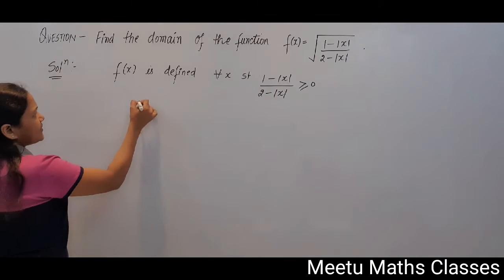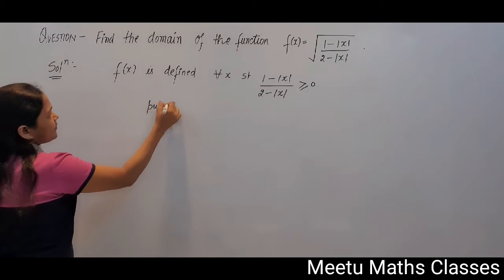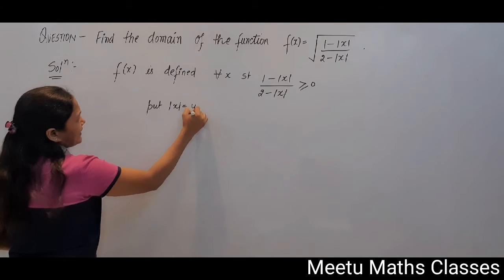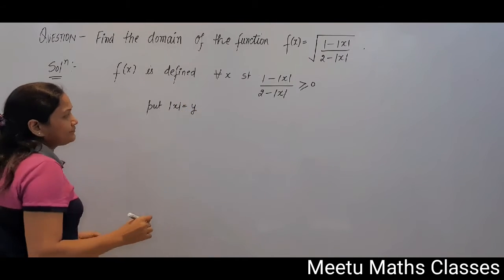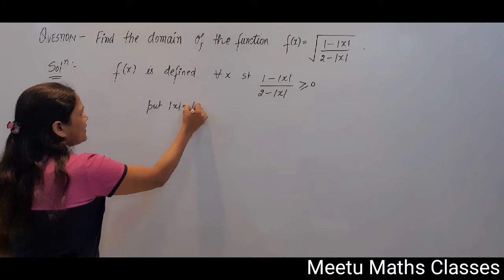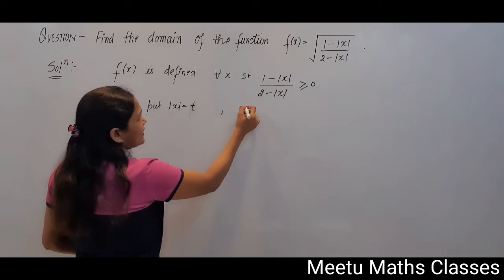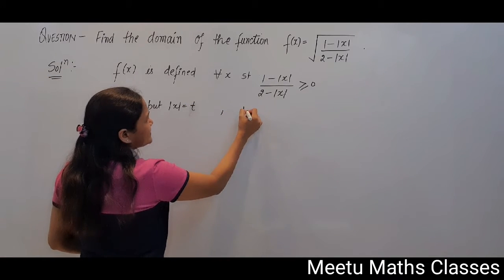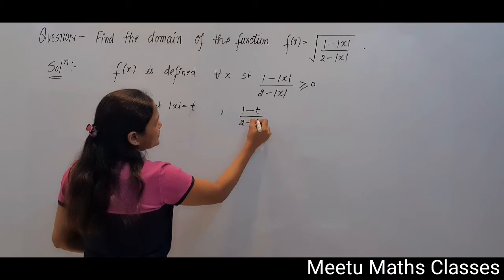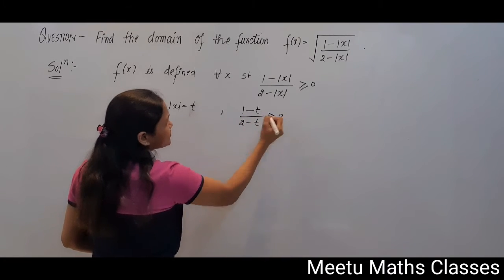Now we can substitute |x| = t. So our purpose is to find the values of t for which (1 - t) / (2 - t) should be greater than or equal to 0.